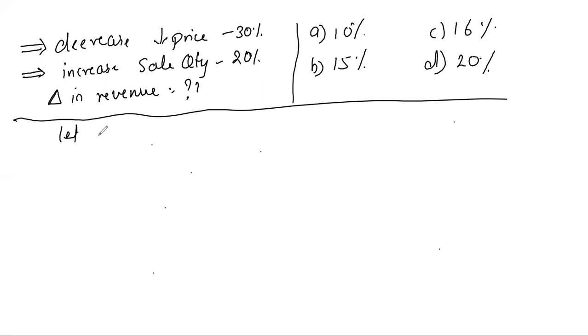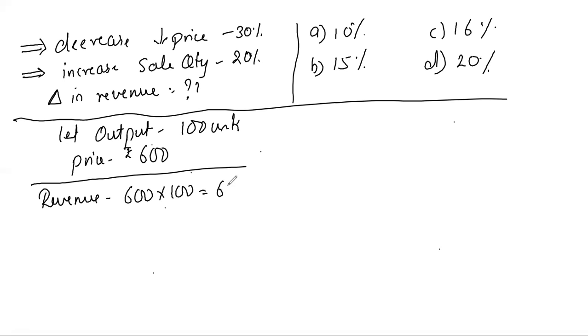be 600 rupees. So my current revenue that I am generating is 600 multiplied by 100, that is 60,000. Correct?